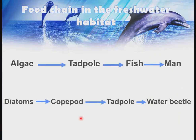Food chains in the freshwater habitat: algae → tadpole → fish → man (tertiary consumer). Another example: diatoms → copepod (primary consumer) → tadpole (secondary consumer) → water beetle (tertiary consumer). These are the different food chains found in the aquatic habitat.